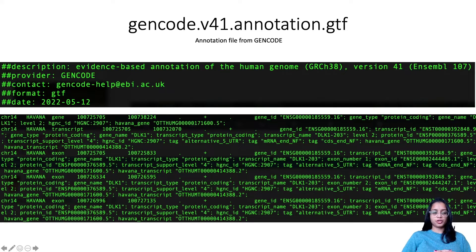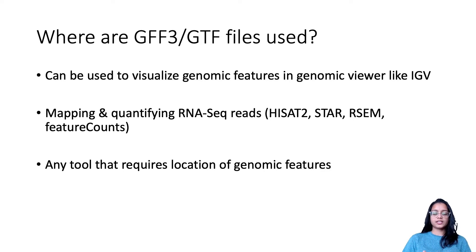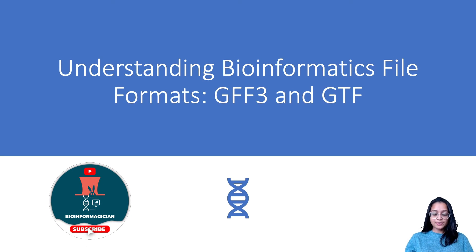These files are commonly used to visualize genomic features in genome viewers like IGV. They are also used when mapping and quantifying RNA-seq reads: programs match the genomic location of each read in a BAM file to gene annotations in a GFF or GTF file, determining whether the read aligns to an exon, then summarize across the entire BAM file to generate counts for each gene. These files are also used by any tool that requires the location of genomic features. I hope you found today's video helpful — please subscribe, like, share, and leave comments below.